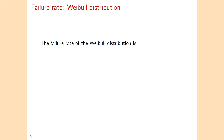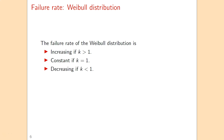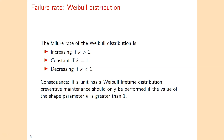To summarize: the failure rate of the Weibull distribution is increasing if k is larger than 1, constant if k equals 1, and decreasing if k is smaller than 1. If a single Weibull distribution provides a good fit for your data, you can immediately conclude that preventive maintenance should only be performed if k is greater than 1. If k equals 1 or is below 1, the optimal policy is to not perform any preventive maintenance.